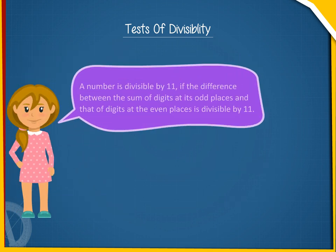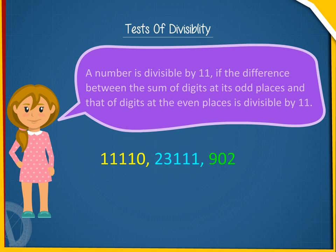A number is divisible by 11 if the difference between the sum of digits at its odd places and that of digits at the even places is divisible by 11. For example, 11,110; 23,111; 902; 44,660.